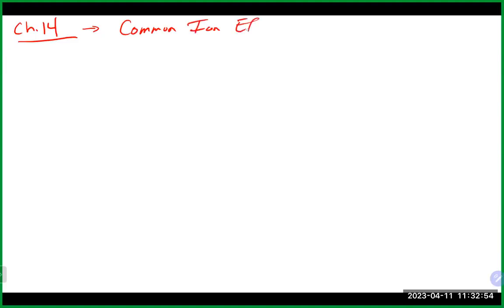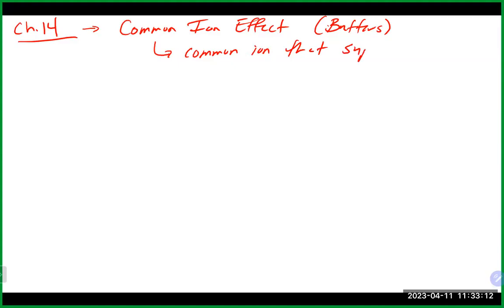Last time, after we talked about polyprotic acids, we really delved into the idea of the common ion effect. The common ion effect is really what's happening in a buffer situation. In a common ion effect, what we have is a common ion that will suppress the ionization of a weak acid or a weak base.